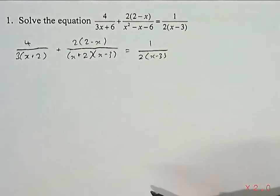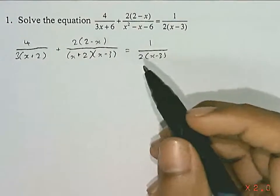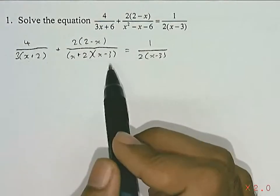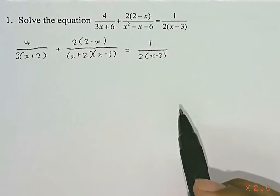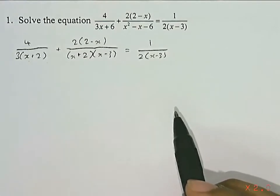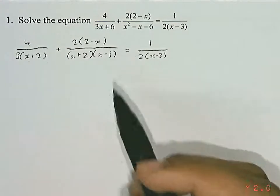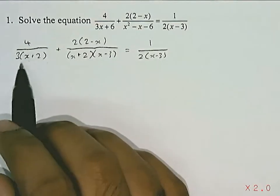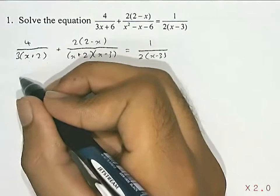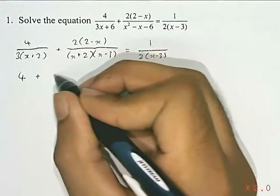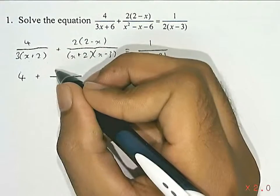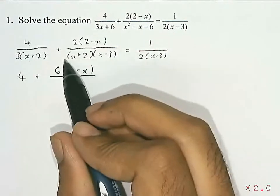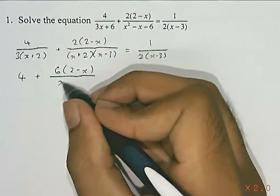Now immediately after I factorize, we can see some similarities in each of the expressions, like the recurring x plus 2 and the recurring x minus 3. So in order to simplify this entire equation further, let's try and get rid of all the denominators. So I'm going to start by multiplying everything by 3 times x plus 2.